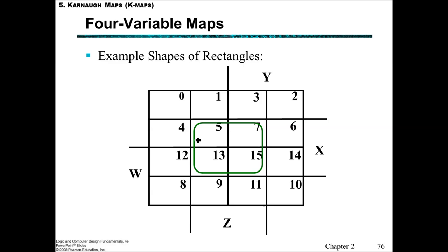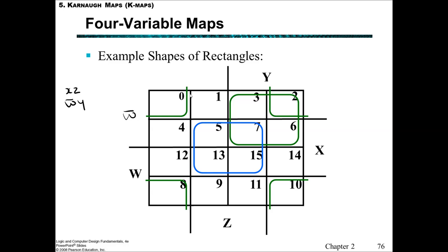Here are some examples of shapes on a four-variable map. In one 2×2 example, Y and W are changing but Z and X stay the same — written as X·Z. Another 2×2: X and Z are changing but Y stays as not-W, written as not-W·Y. An interesting one: wrapping around the corners — cells 0, 2, 8, and 10. W is changing (not-W up top, W below) and Y is changing, but Z is not changing (it's not-Z on both sides) and X is also not changing (also not-X). So we write not-X and not-Z.